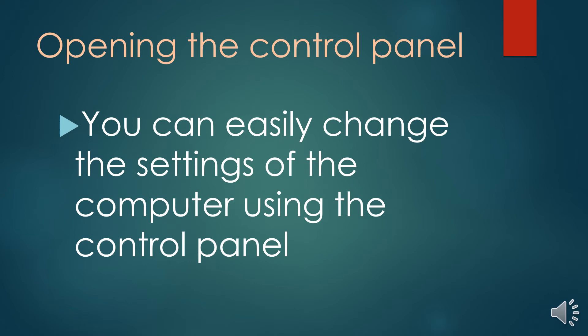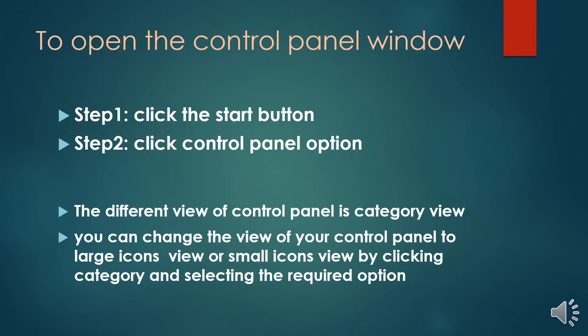Next, how to open the control panel? We can easily change settings of the computer using the control panel. To open the control panel window, follow the given steps. Step 1: click the Start button. Step 2: click the Control Panel option. The control panel window appears on the screen. The default view of the control panel is Category view.